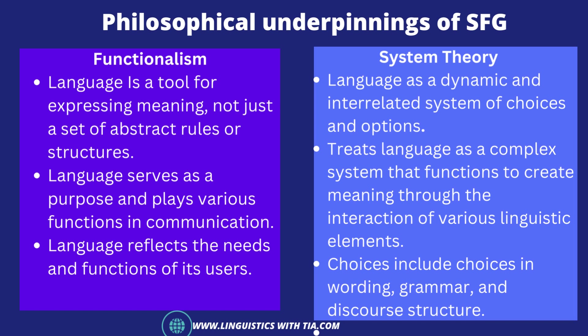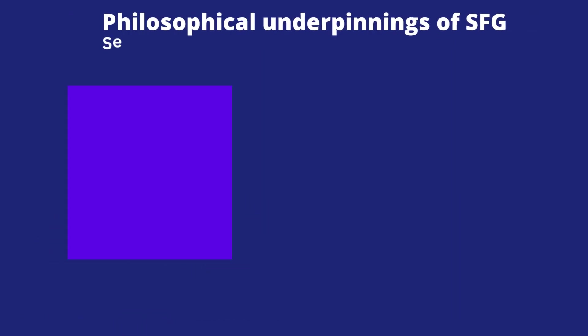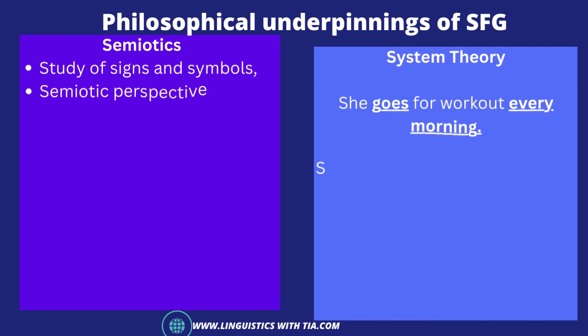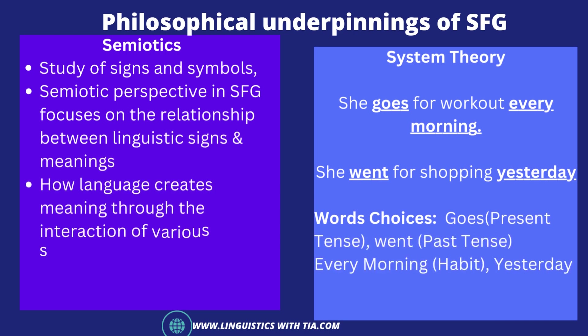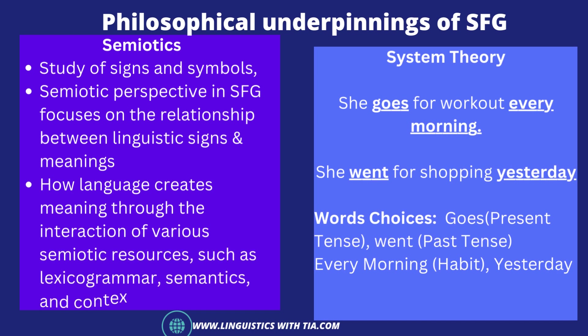System theory is a general theoretical framework used to study complex systems and their components, interactions, and functions. Applied to language, it is about interconnected systems — the structure of language — which is a combination of single choices and clauses. For example: 'She goes for a workout every morning' and 'She went for shopping yesterday.' The word 'goes' shows present tense, 'went' shows past tense; 'every morning' shows habit, and 'yesterday' indicates a past event. These linguistic choices form a complete sentence structure according to system theory.